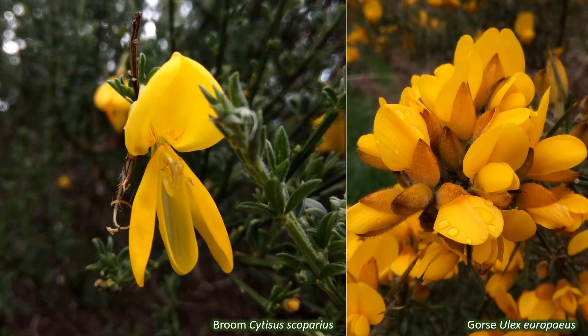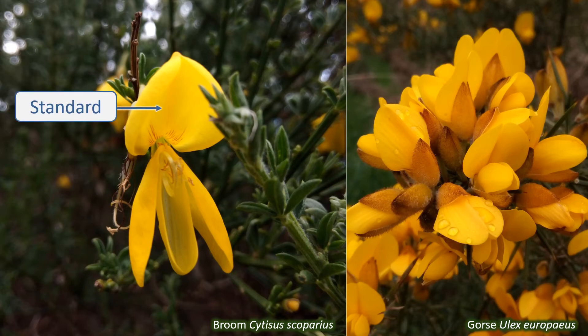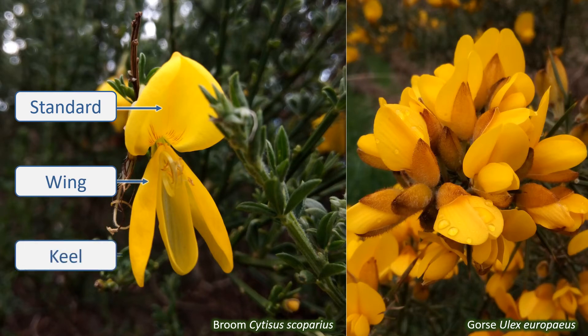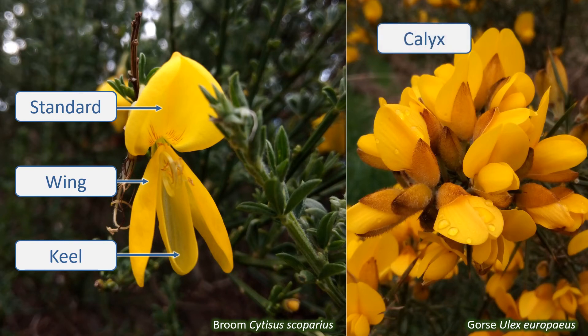The flowers of this family are very distinctive and generally recognisable as typical pea flowers. They are irregular in shape, so they're only symmetrical in one direction, and they have five petals. These petals are adapted to form a fairly standard layout and have their own names. The large petal at the top of a flower is called the standard. The two at the sides are the wings. The lower two petals are fused to make the keel. Inside are ten stamens, often fused into a tube, and a pistil. The ring of sepals — the calyx — also tends to form a tube part way down.